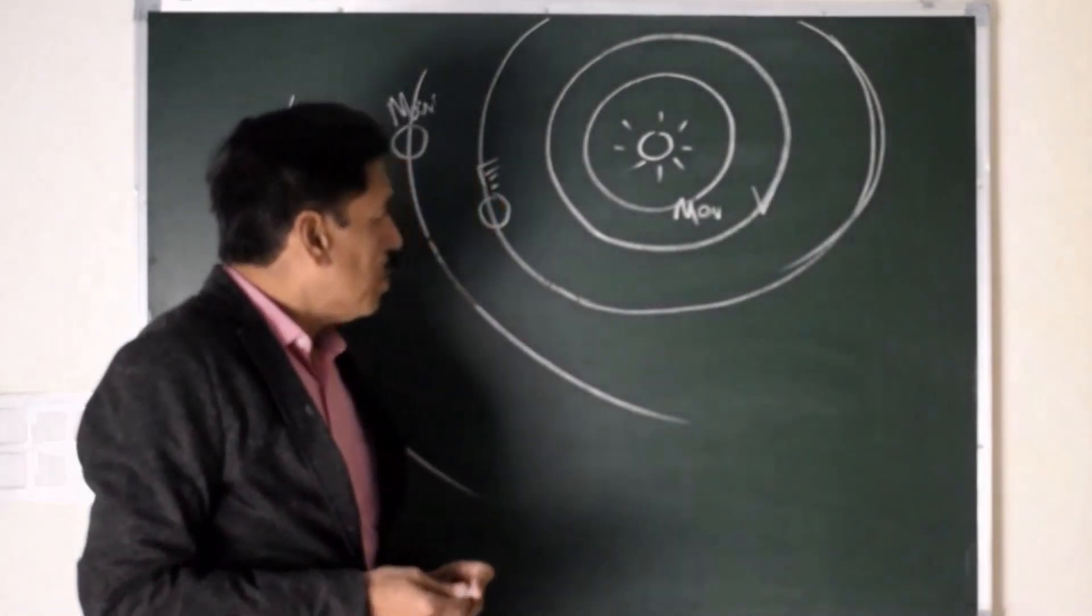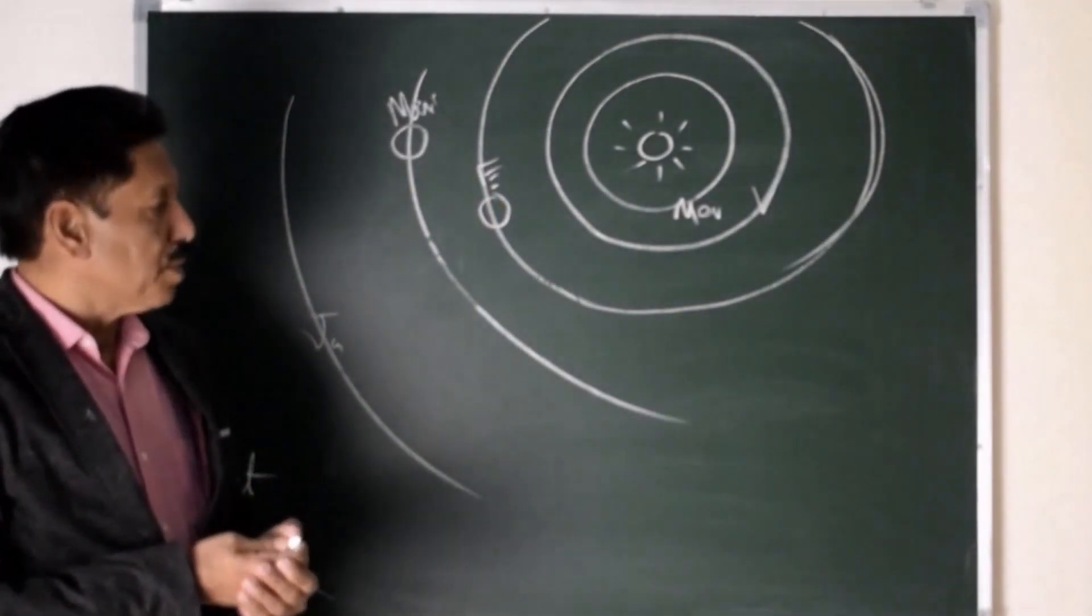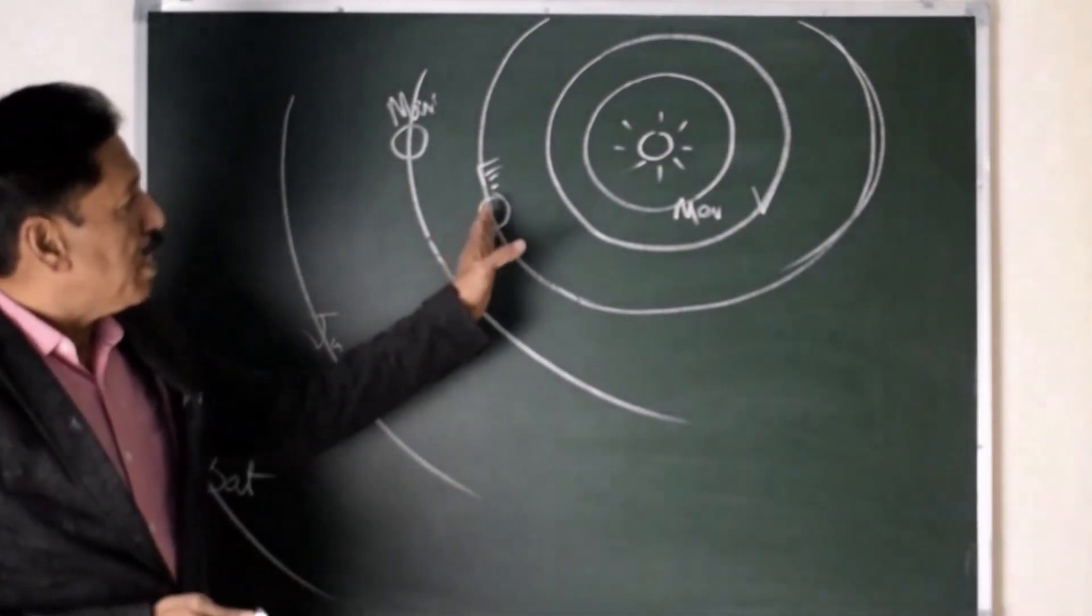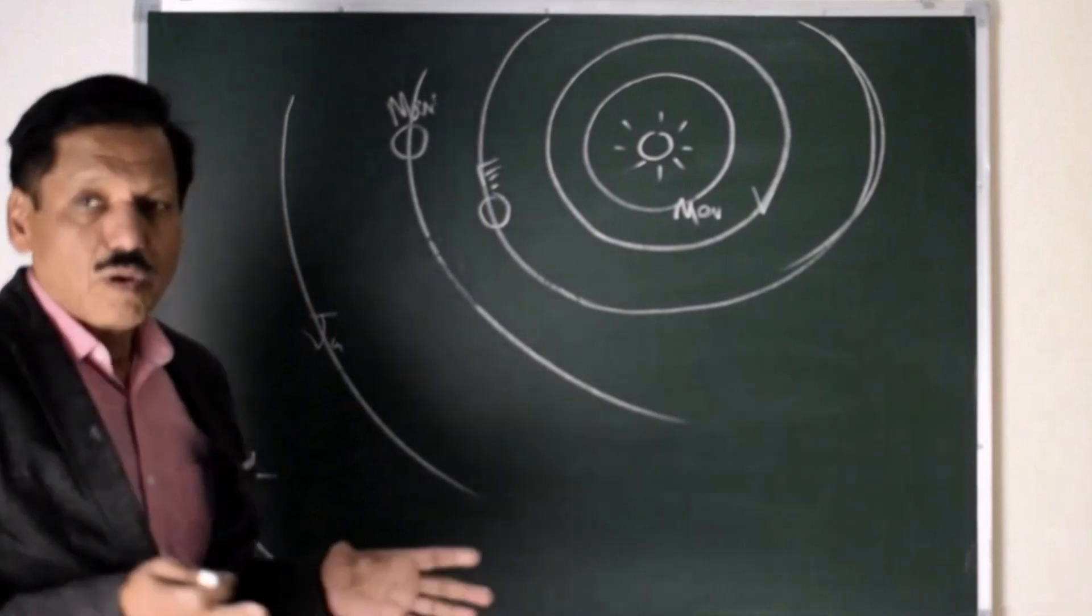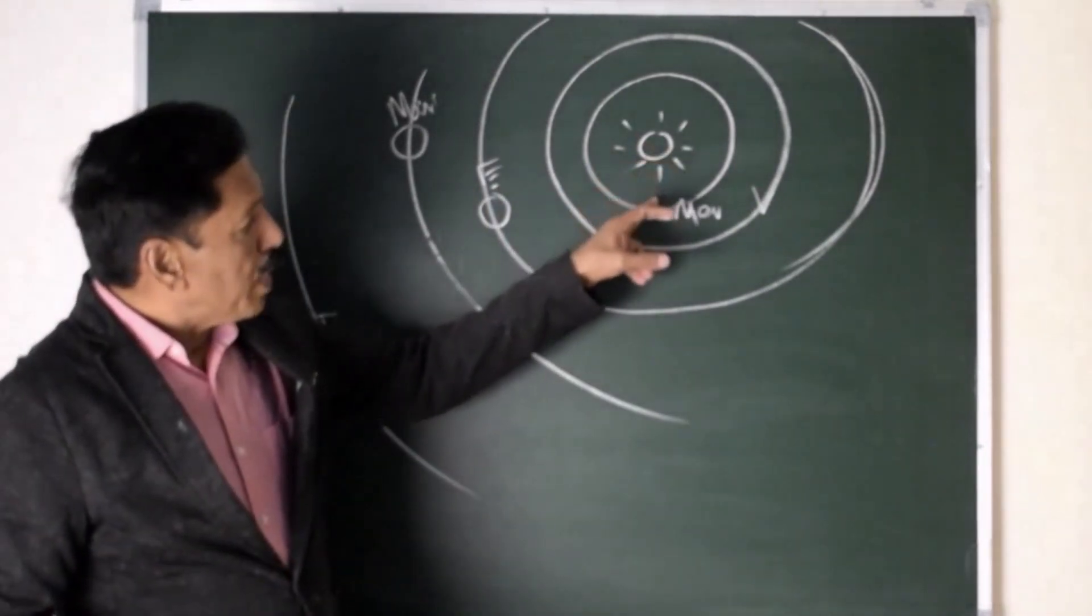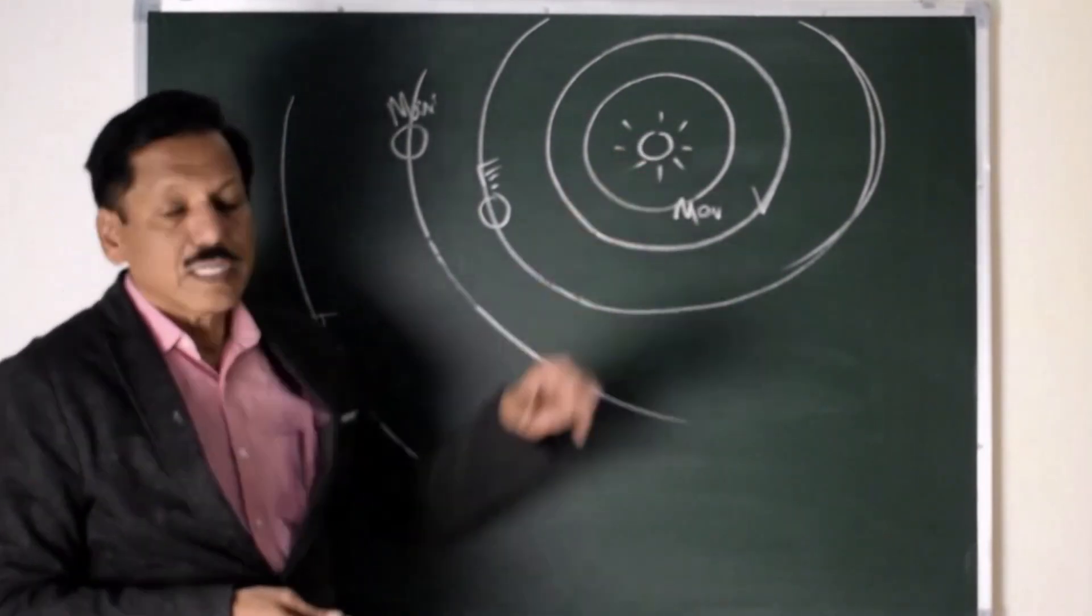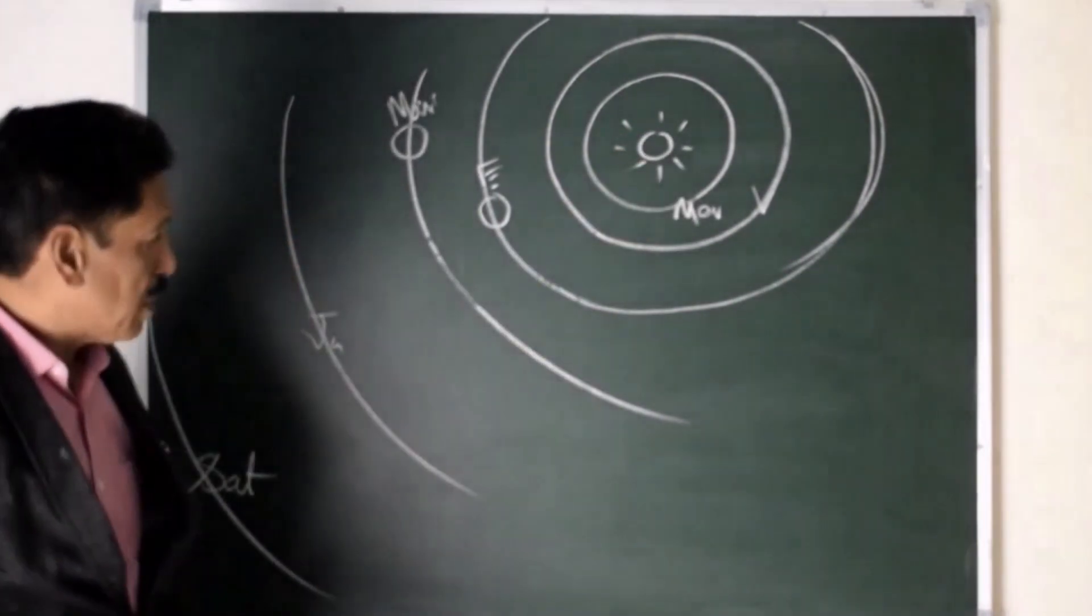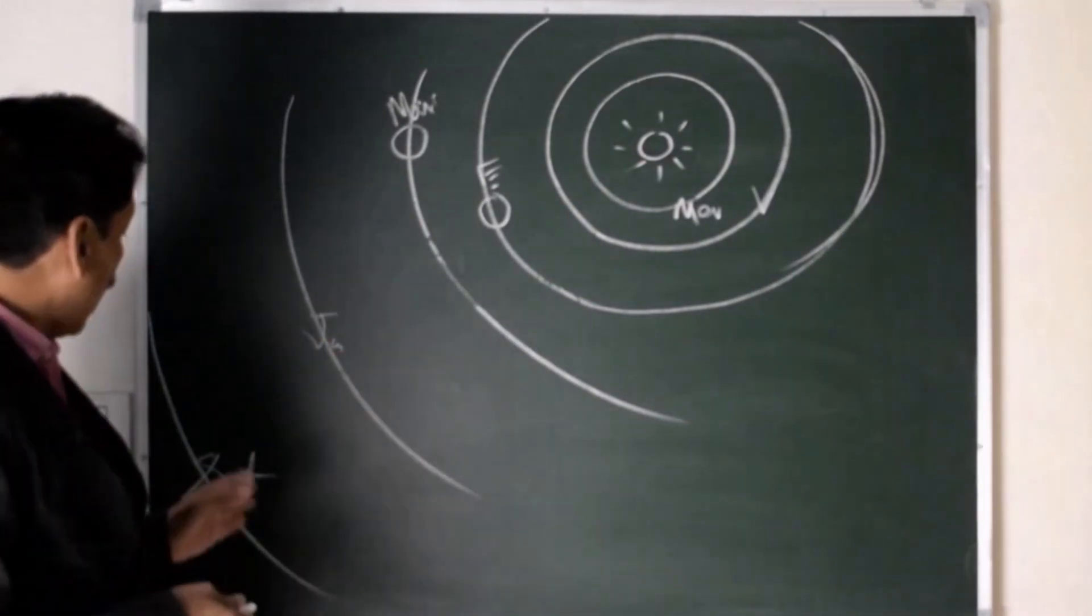Now, talking about the distance. If you consider Earth-Sun distance as a unit, it's called astronomical unit. The distance of Sun to Mercury is 39% and Venus to Sun is 72% of this distance. Jupiter is at 5.2 and Saturn is at 9.5.